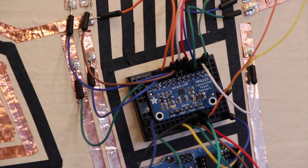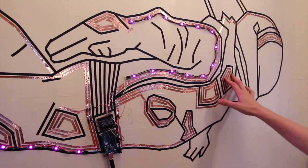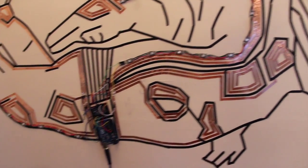The capacitive touch sensor is connected to the Arduino. This sensor turns any conductive object, such as copper tape, into a button. I place copper pads throughout the mural.